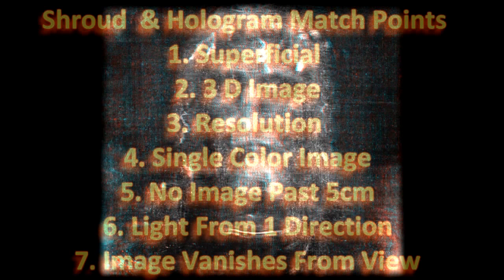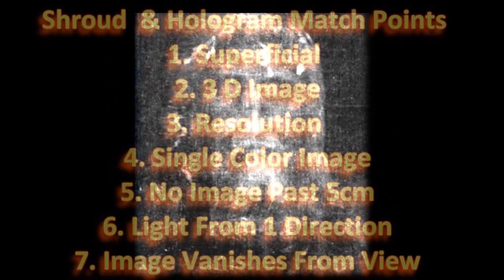The image-forming process on the shroud also took place only within four centimeters. Light comes from only one direction to make a hologram. And the image vanishes from view when flipped to the back side — when the shroud is backlit, you cannot see the image. When a holographic film plate is turned around, you cannot see the image because it is so incredibly superficial. But if the shroud were a painting or a contact image, we would be able to see it from the back side. We can't — and that's because it is not a contact image or a painting.